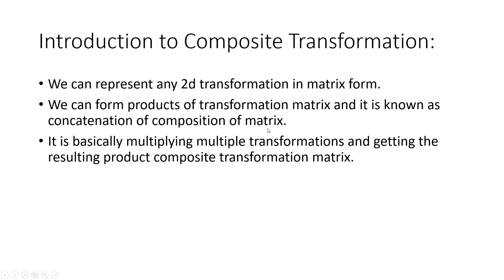So first, introduction to composite transformation. What is composite transformation? We have learnt about normal transformation, where you perform a single transformation operation. Composite transformation is when more than one transformation is happening and you combine them simultaneously. We can represent any transformation — translation, scaling, or rotation — as a matrix, and we can form products of those transformation matrices. This product is known as the composition of the matrices.